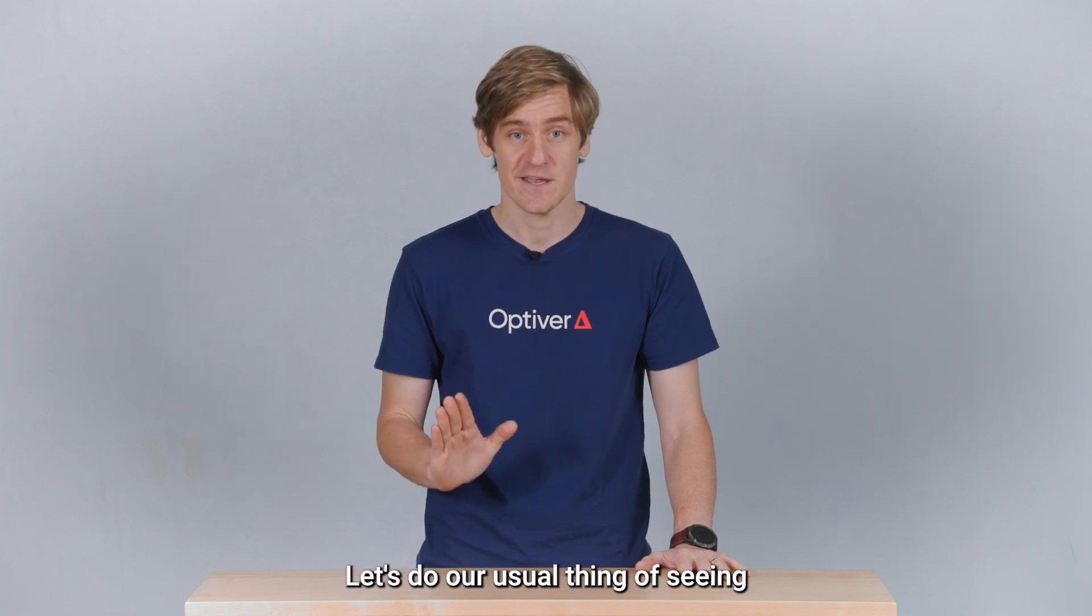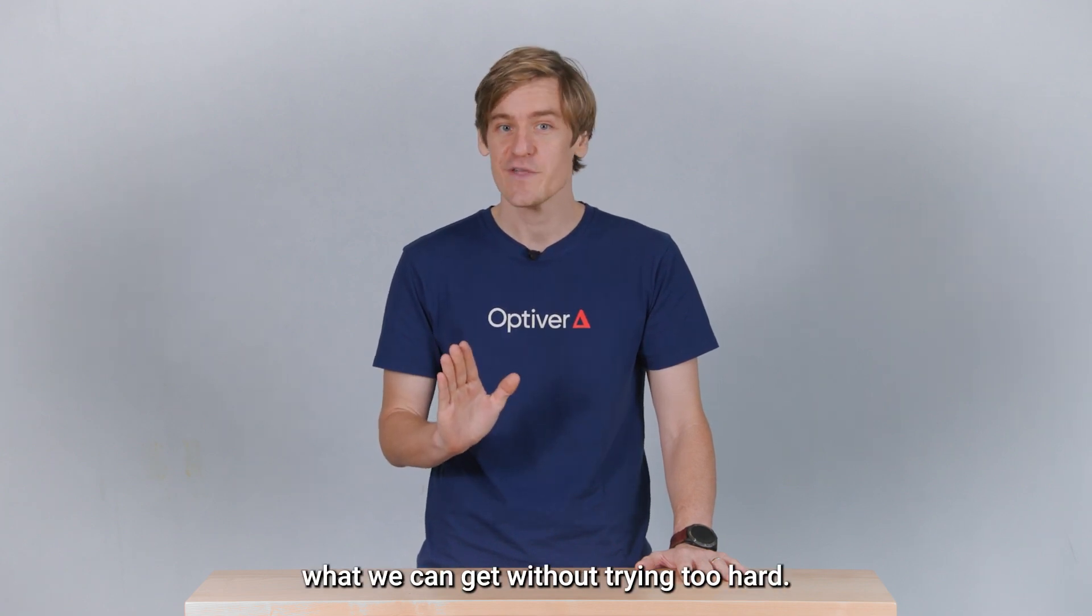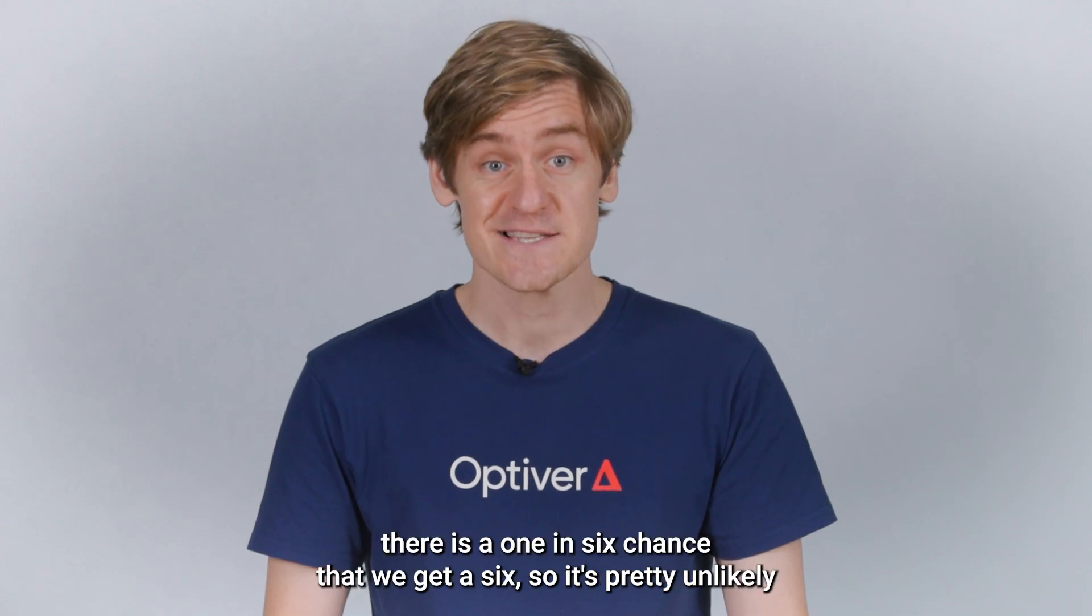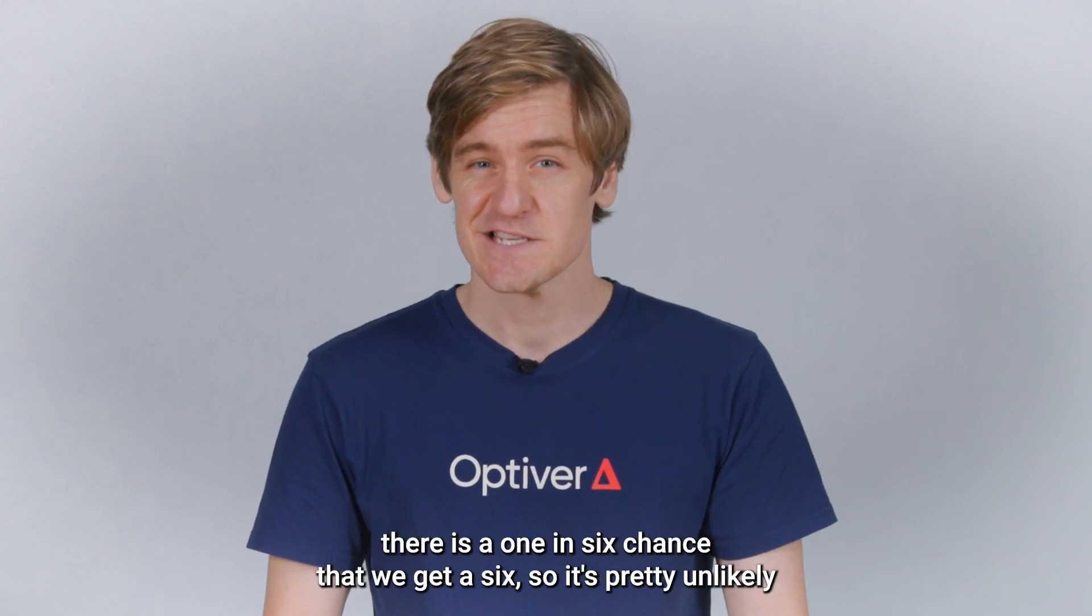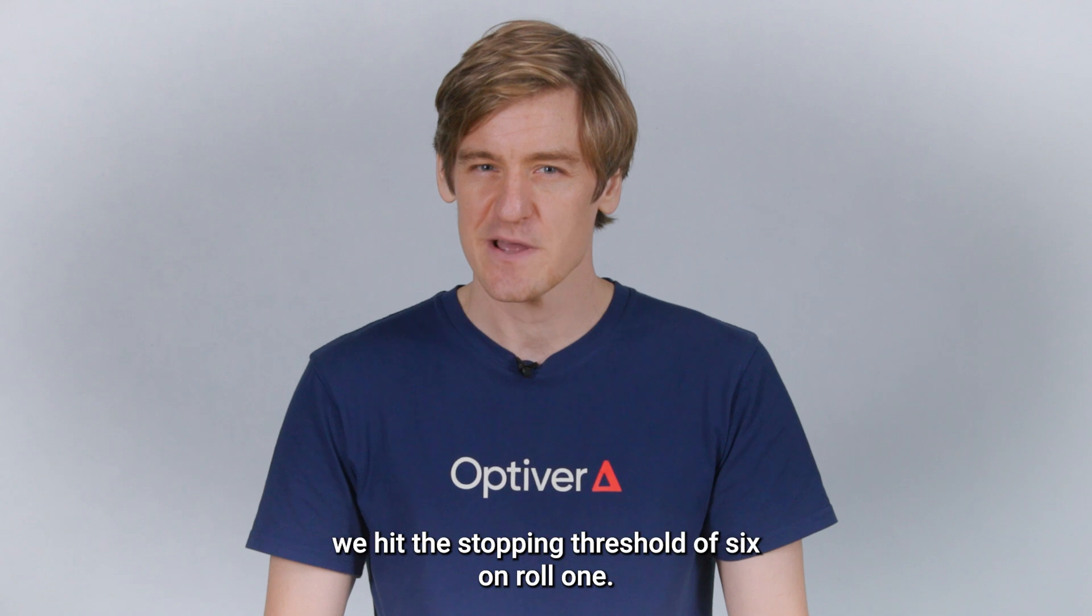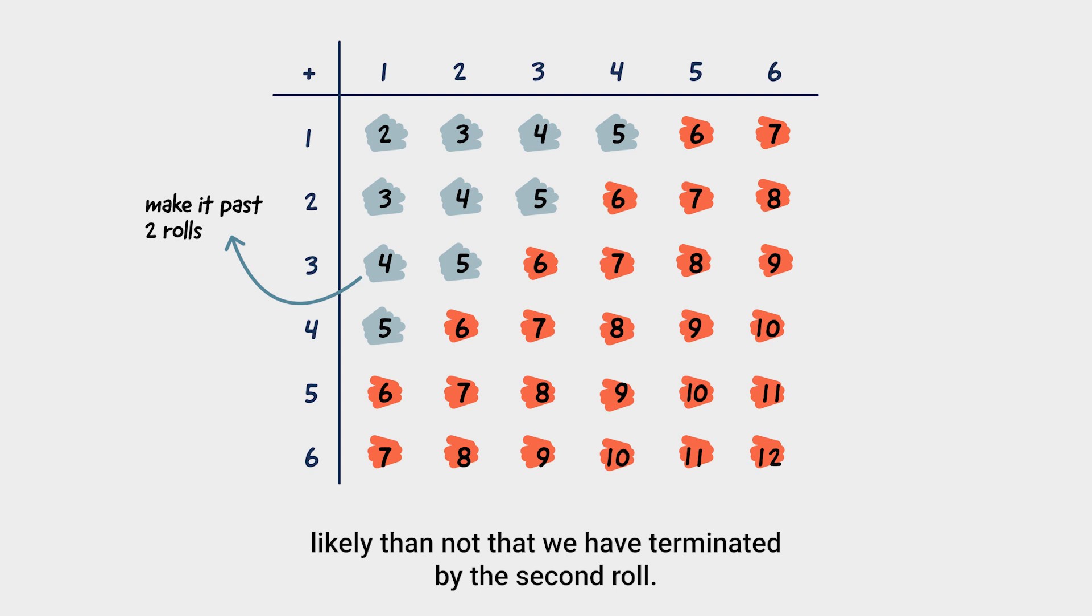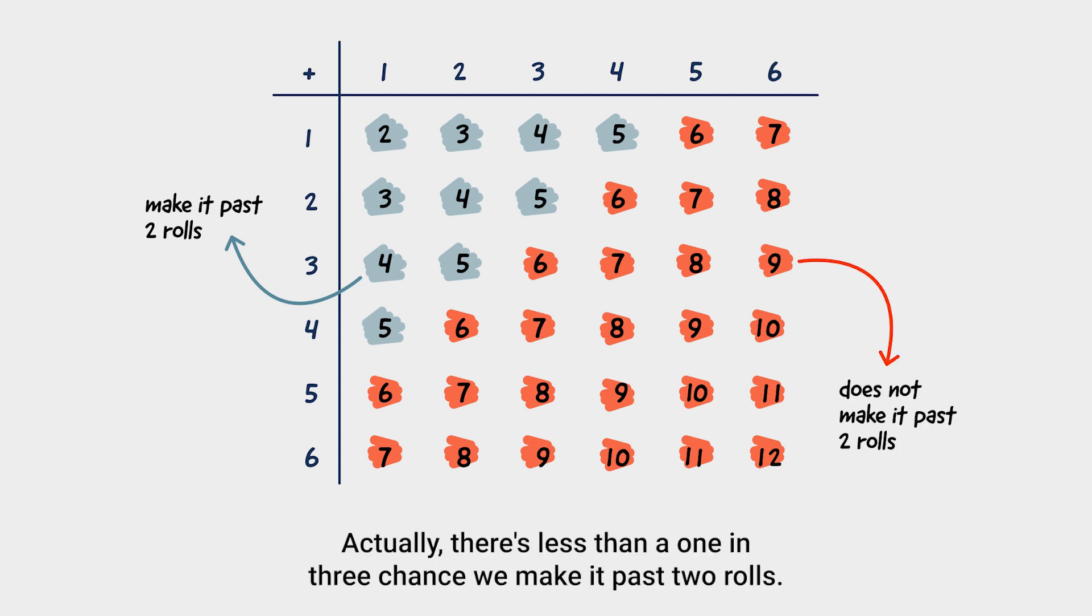Let's do our usual thing of seeing what we can get without trying too hard. For our first roll, there is a one in six chance that we get a six. So it's pretty unlikely we hit the stopping threshold of six on roll one. However, with two rolls, the sample space of the sum is this familiar from high school grid. We can see that it is more likely than not that we have terminated by the second roll.